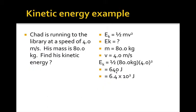So here's a kinetic energy example. Chad is running to the library at speed of 4 meters per second. His mass is 80 kilograms. Find his kinetic energy. So kinetic energy formula, we write it down, and then we find what variables are the knowns and unknowns. The unknown is kinetic energy. The mass and velocity are given, so we write those down. Then we substitute into our equation, 1 half 80 times 4 squared, and we get 640 joules.